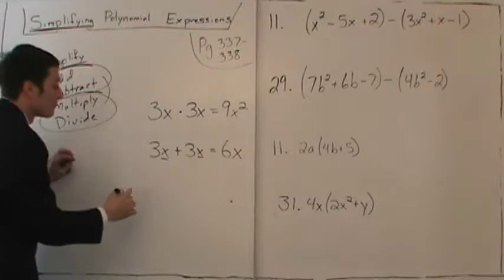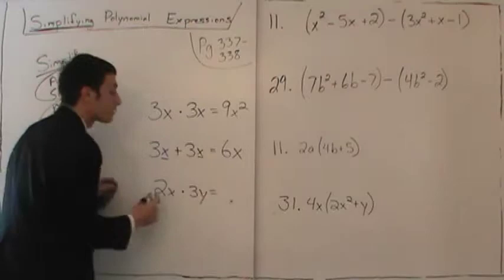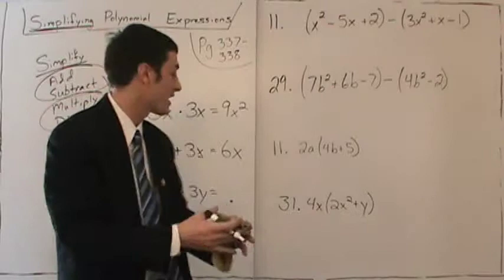What if I write 2x multiplied by 3y? We can multiply because when we multiply, things do not have to match. 2x times 3y — we just glue it all together. 3 times 2 is 6, glue the x and the y together, we get 6xy.